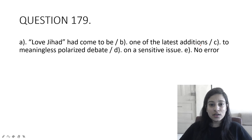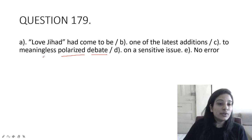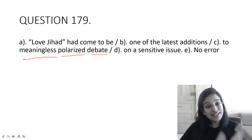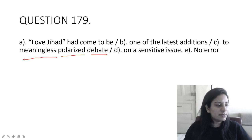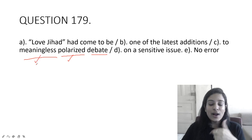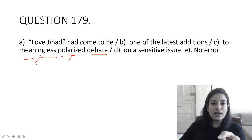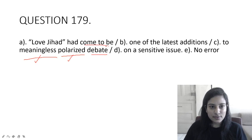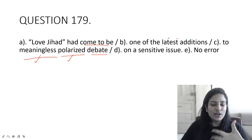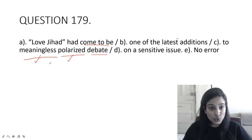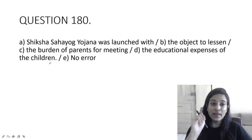Love Jihad had come to be one of the latest additions to meaningless polarized debate on a sensitive issue. Our answer is option C. You are working on the noun debate, polarized is adjective, so I need an adverb meaninglessly. Replace meaningless with meaninglessly. Come to be means begin to exist. So Love Jihad, one of the latest additions is that, where a sensitive issue meaninglessly polarized debate is that.